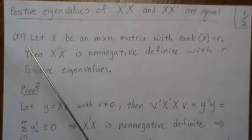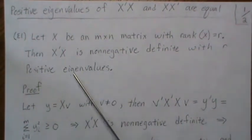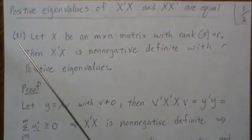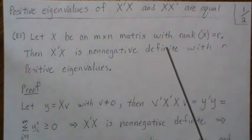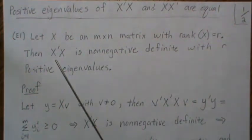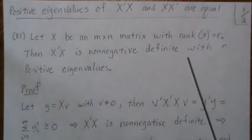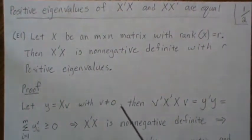Before we do that, I want to go through one theorem here. I'm going to call it E1 for eigenvalues. Let X be an M by N matrix with rank R. Then X prime X is a non-negative definite matrix with R positive eigenvalues.